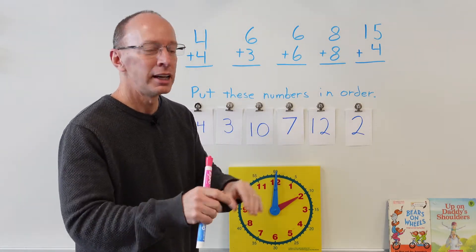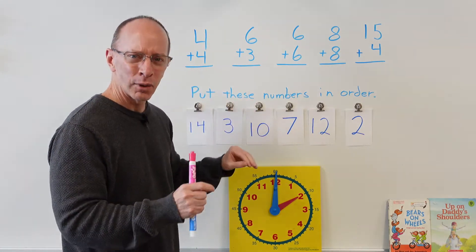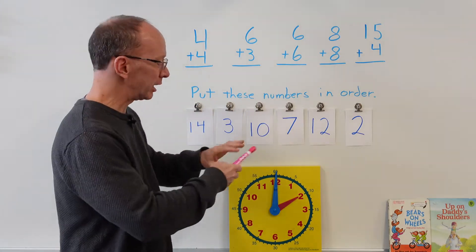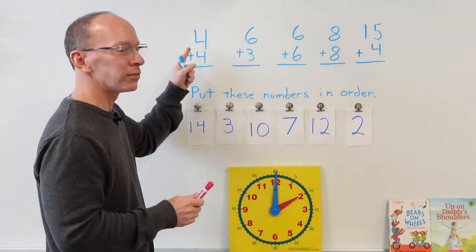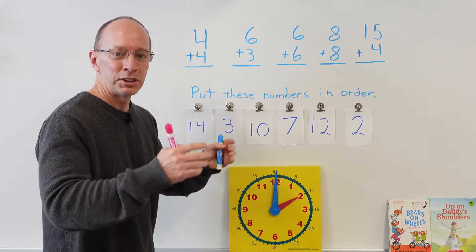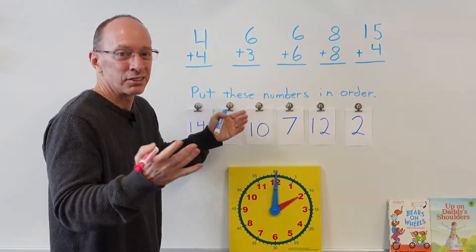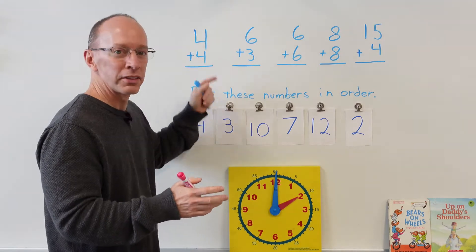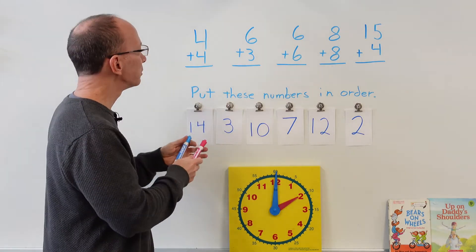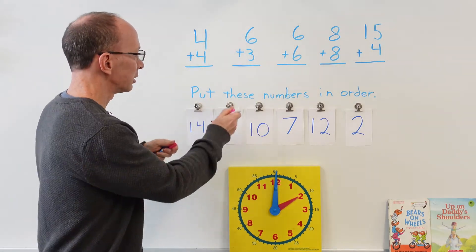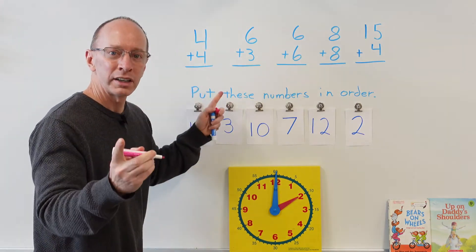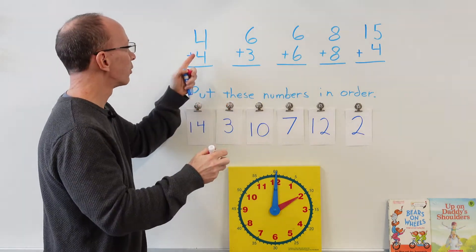When you do that, I want you to make some dots. For example, for this problem here four plus four, I want you to start with the biggest number. You'll notice that this is a double fact, so both of the numbers are the same, but I want you to make dots for some of these numbers—the smallest number. So you can just pick one of the fours here.